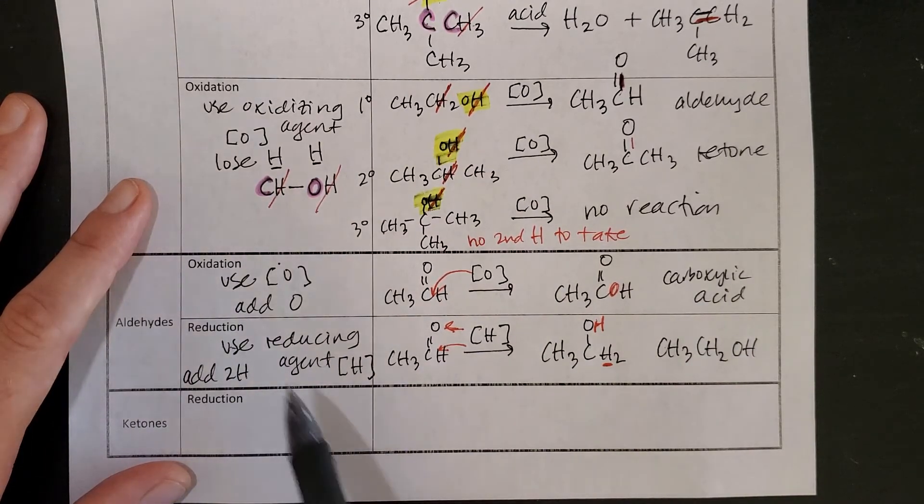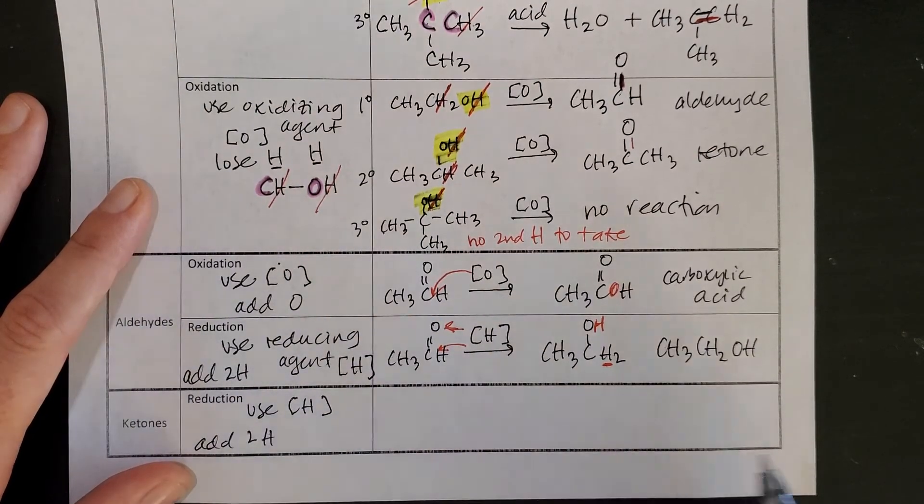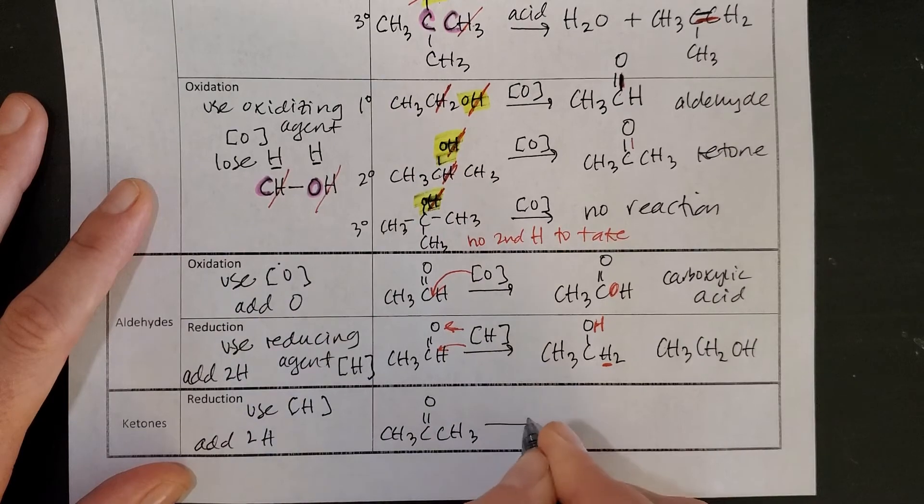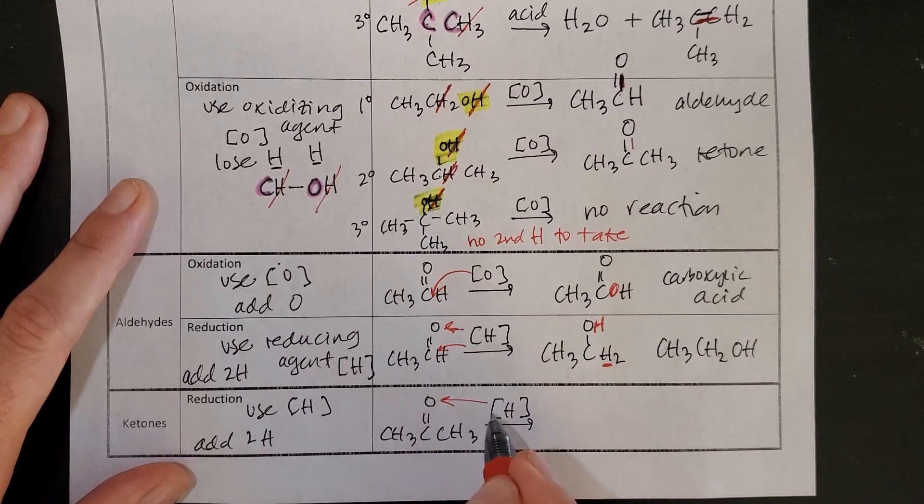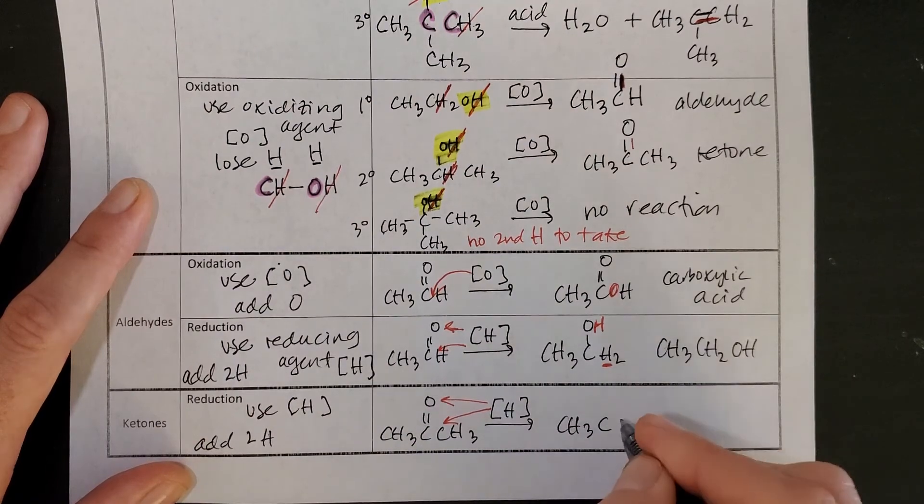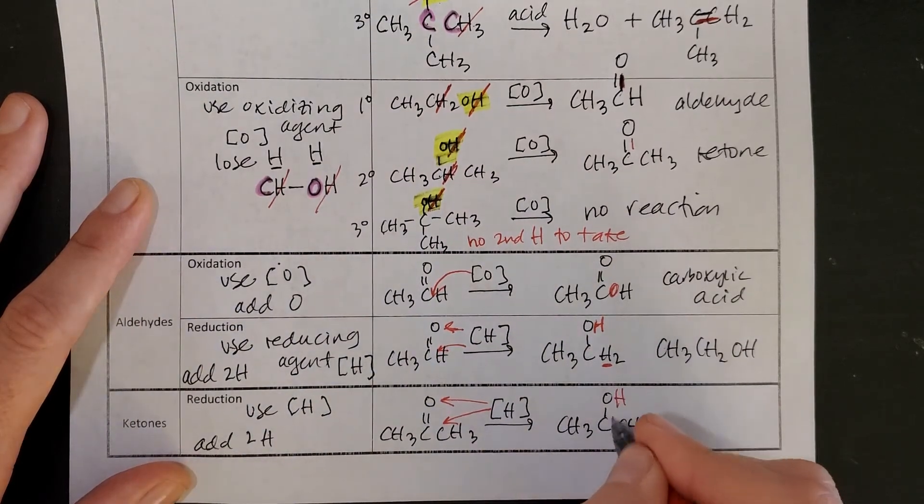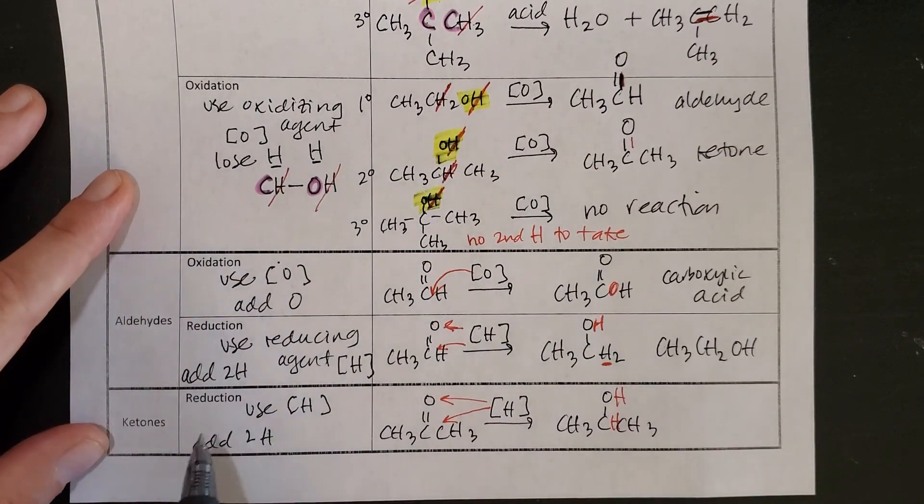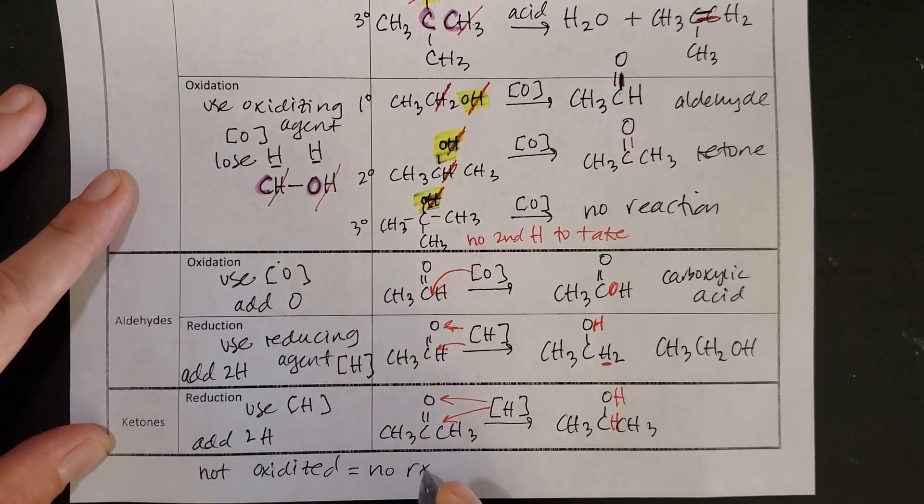Last reaction here, reduction. So again, we're going to add two hydrogens. Let's take a fairly small ketone. Reduce it. Reduction means I'm going to add H's across that double bond. And so what I get is CH3C up to the O, CH3, and I've added an H to each side of that double bond. That's a good way to just leave it expanded a bit. A final thing to note, your ketones cannot be oxidized. So that would be another no reaction.